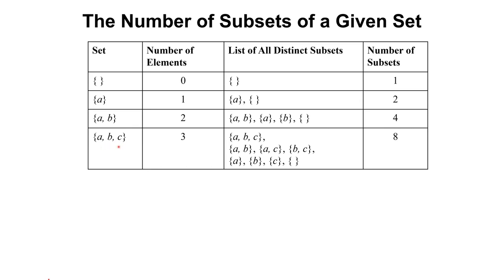For a set containing 3 elements, the subsets are: the set itself and the empty set (always the default), sets containing 2 elements — {a,b}, {a,c}, {b,c} — and sets containing 1 element — {a}, {b}, {c}. Counting all of these gives 1, 2, 3, 4, 5, 6, 7, 8 — so we have 8 subsets for a set with 3 elements.